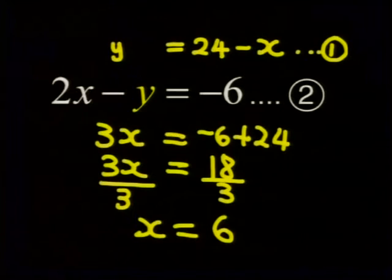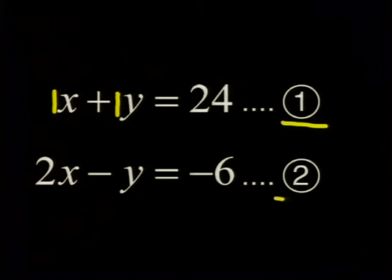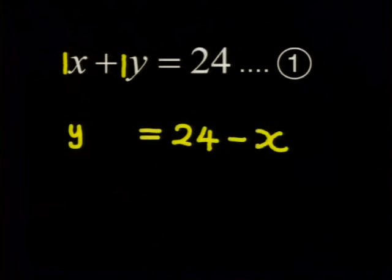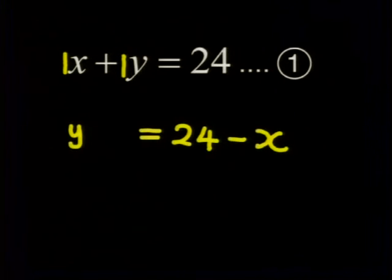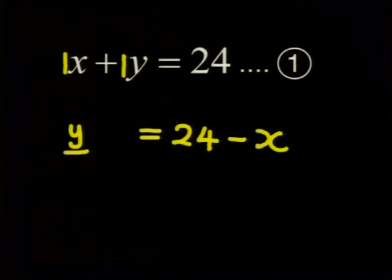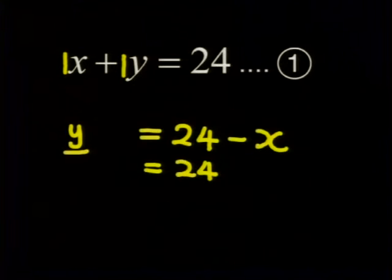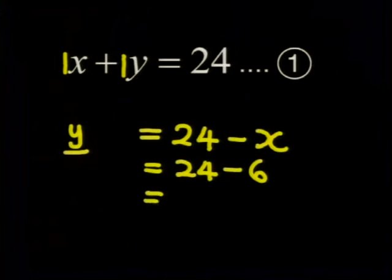Now how do we do this? Well, we substitute again. You can replace x with 6 in the first equation, the second equation, or in this equation that we set up in step 2. Which one should we use? This equation seems to be the most logical one to choose because we want to solve for y, and here y is already the subject of the formula. So y equals 24 minus 6 which equals 18. This means that our solution to our system of equations is the ordered pair (6, 18).